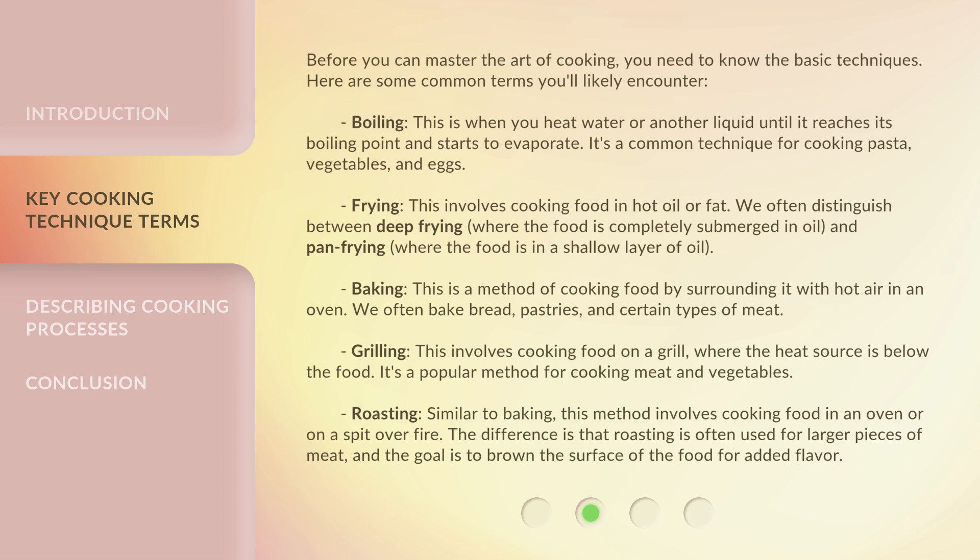Grilling: this involves cooking food on a grill, where the heat source is below the food. It's a popular method for cooking meat and vegetables. Roasting: similar to baking, this method involves cooking food in an oven or on a spit over fire. The difference is that roasting is often used for larger pieces of meat, and the goal is to brown the surface of the food for added flavor.